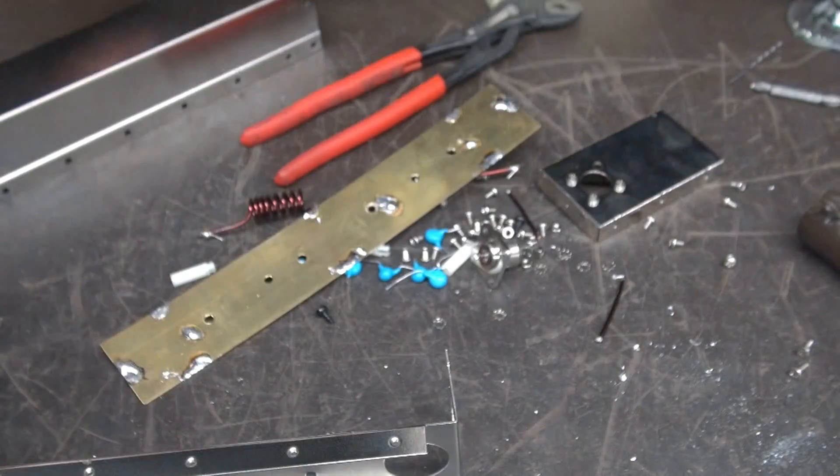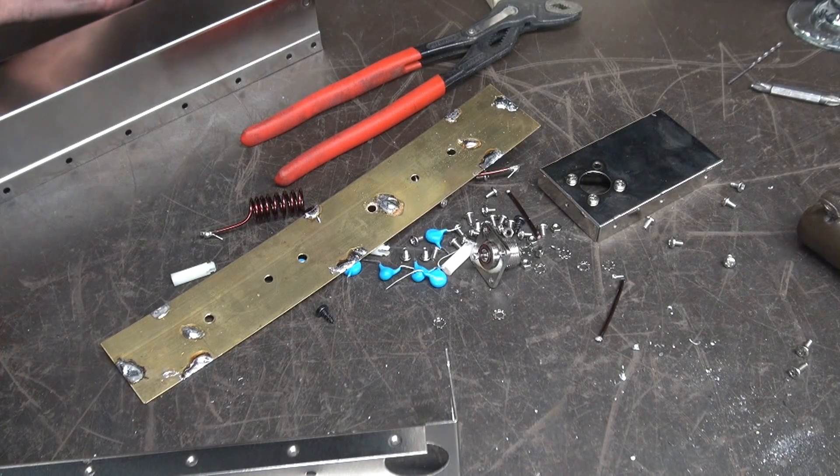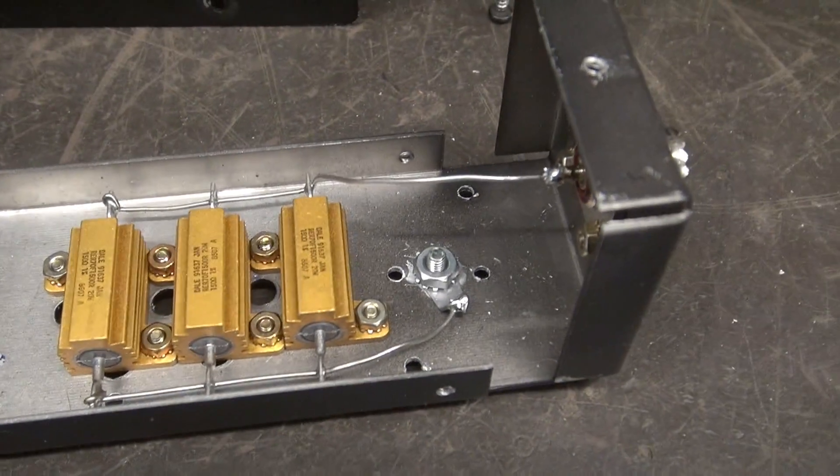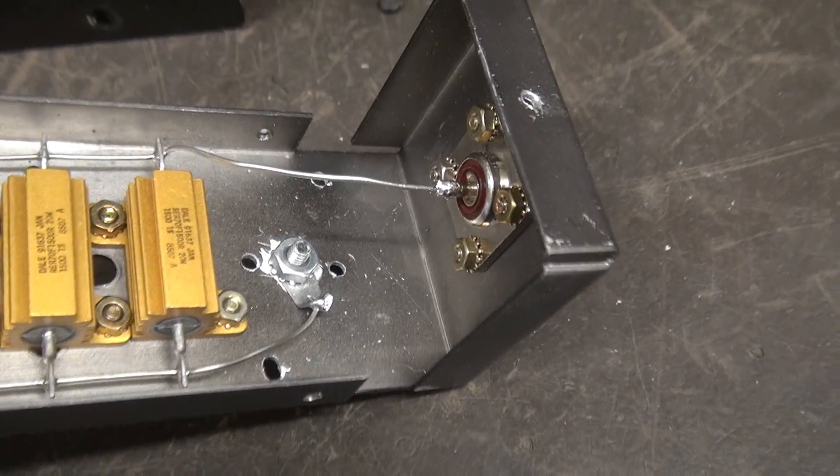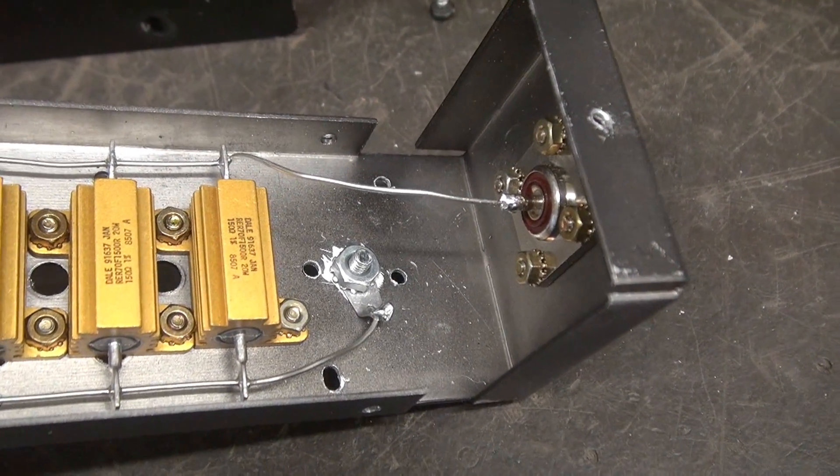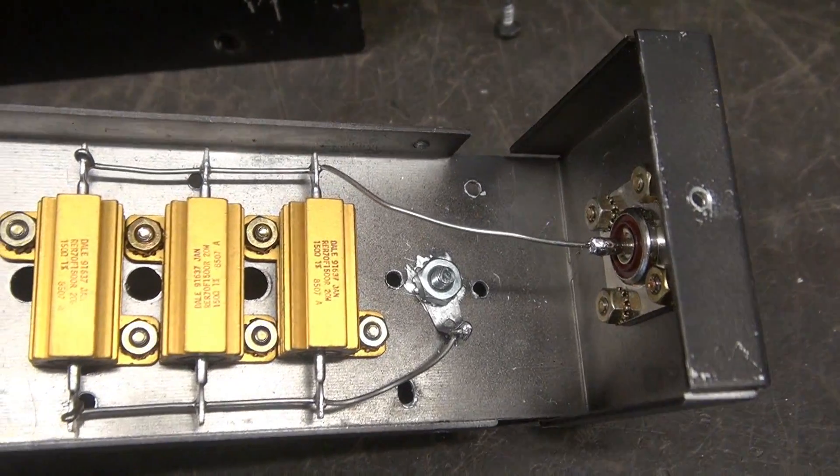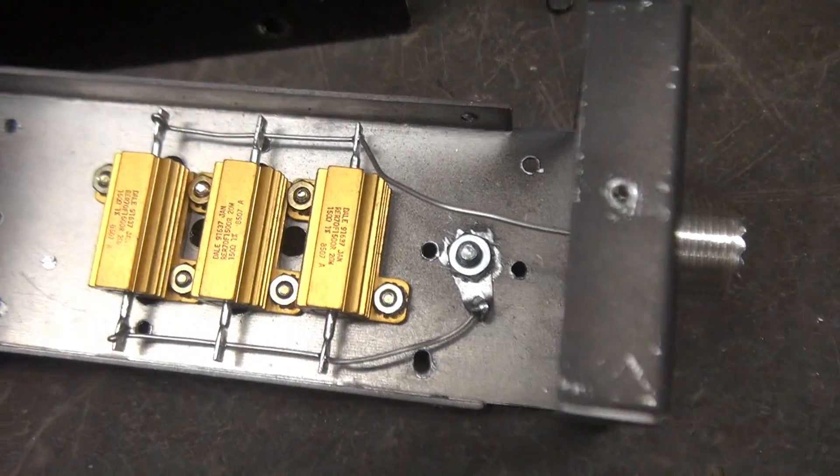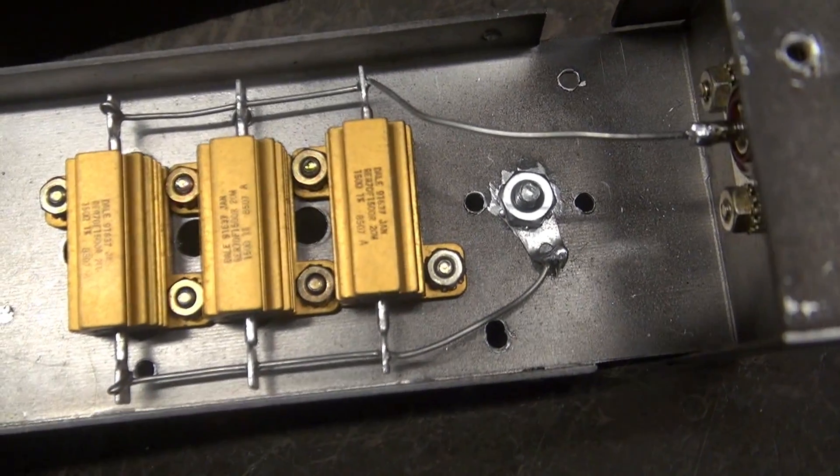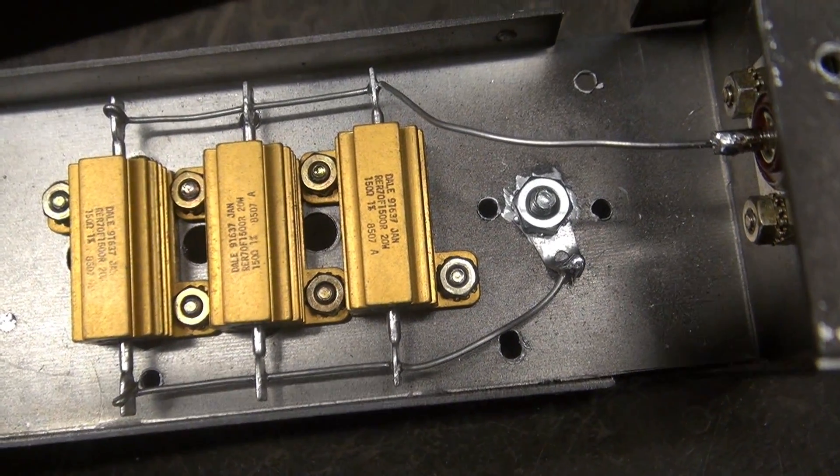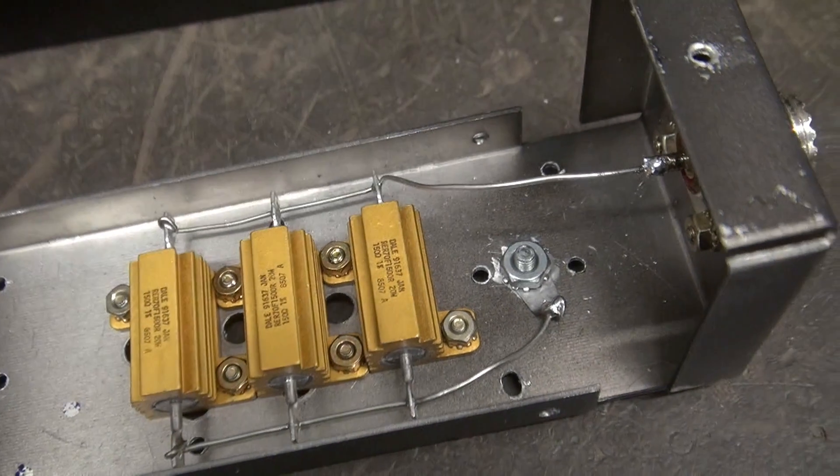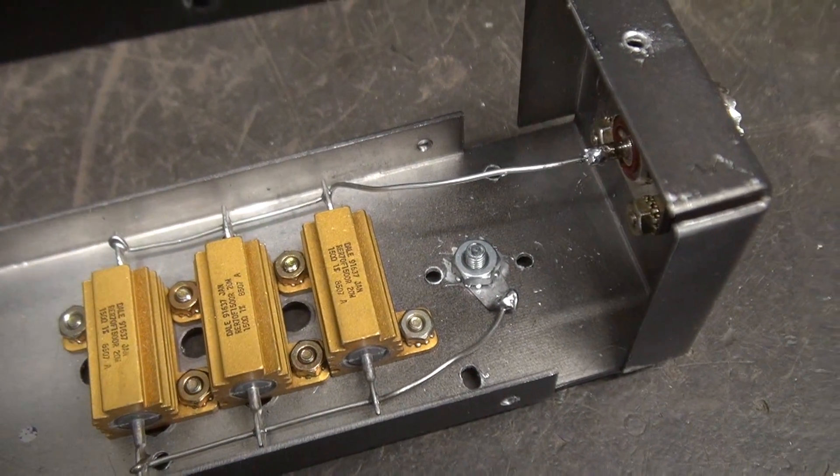So I decided to go ahead and repair the MFJ unit, just make it a low power test dummy load for a little transmitter, say like a Heath HW-16 or Johnson Navigator. So what I did is I installed three 150 ohm Dale non-inductive resistors in parallel to give me 50 ohms at approximately 60 watts.